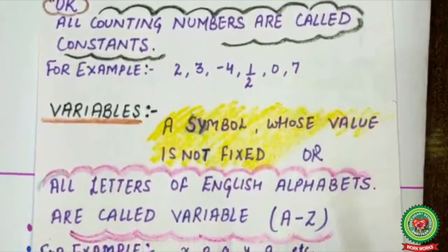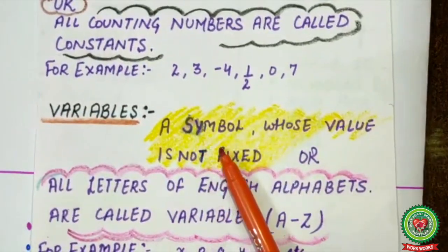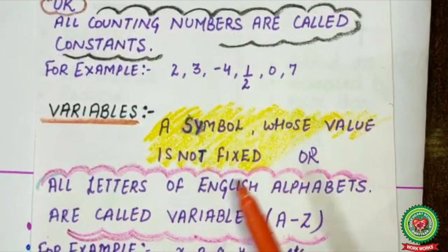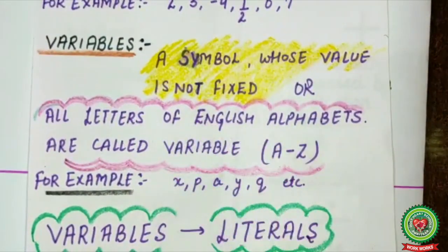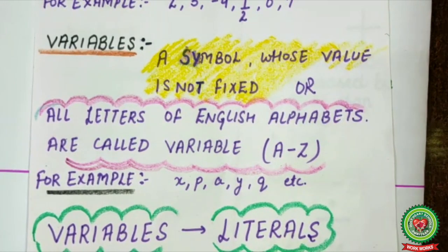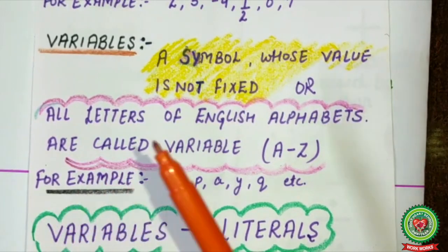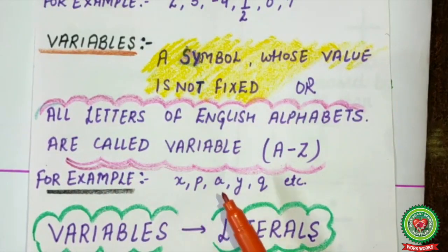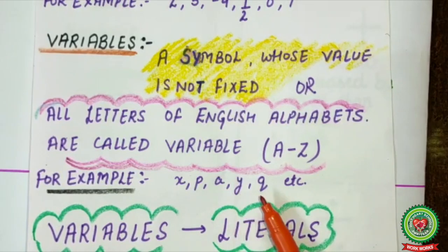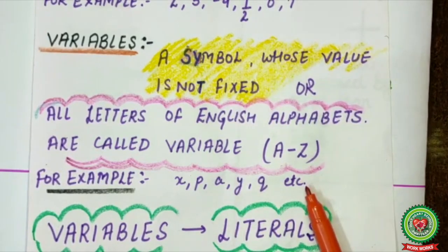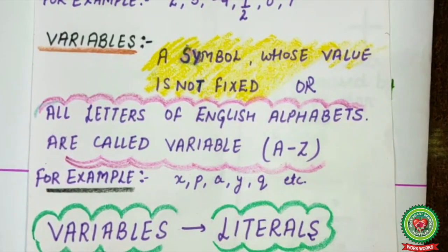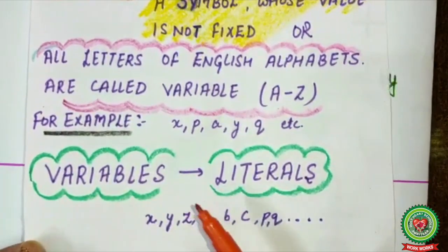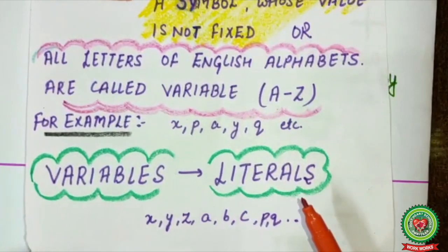And what are variables? A symbol whose value is not fixed. Or, all letters of the English alphabet are called variables, like A till Z all letters. For example, X, P, A, Y, Q, etc. Here, remember, we will always take small letters. So, variables are also known as literals.